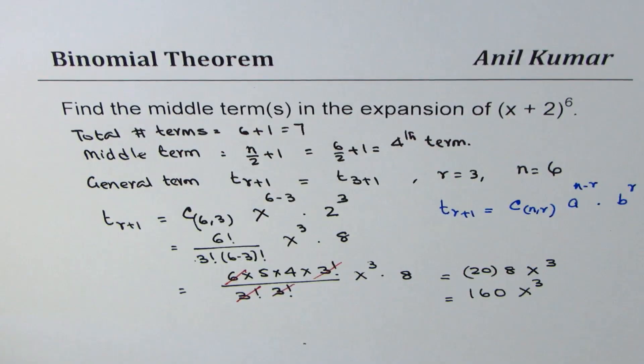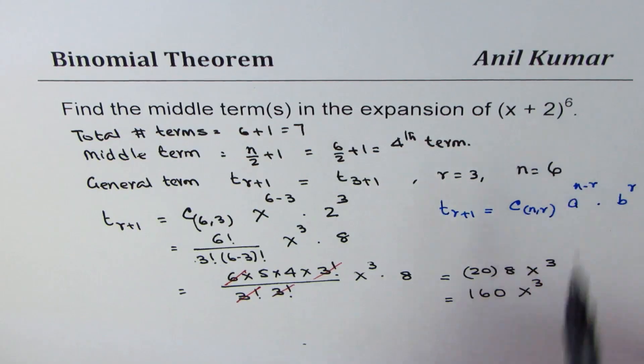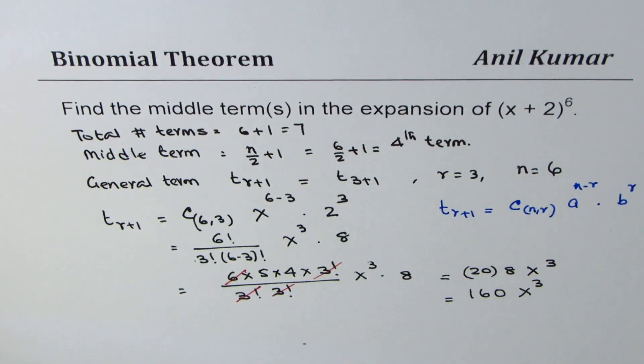So that becomes the middle term for the expansion (x + 2) to the power of 6. I hope that's absolutely clear. Thank you and all the best.